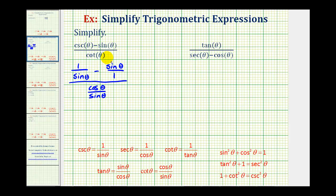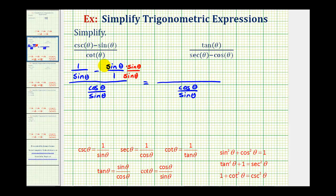Now this actually looks worse than the original expression, but notice how now we could subtract these two fractions, which will be our next step. To subtract these fractions, we do have to have a common denominator, which would be sine theta. We'll have to multiply this fraction here by sine theta over sine theta. Now that we have a common denominator, we can subtract these two fractions. The denominator stays the same, and the numerator would be one minus sine squared theta.